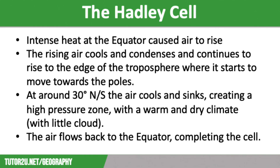Within the Hadley cells the trade winds blow towards the equator. They then ascend near the equator as a broken line of thunderstorms which form the Intertropical Convergence Zone, or the ITCZ. From the tops of these storms the air flows towards higher latitudes, where it sinks to produce high pressure regions over subtropical oceans and the world's hot deserts, such as the Sahara in northern Africa.